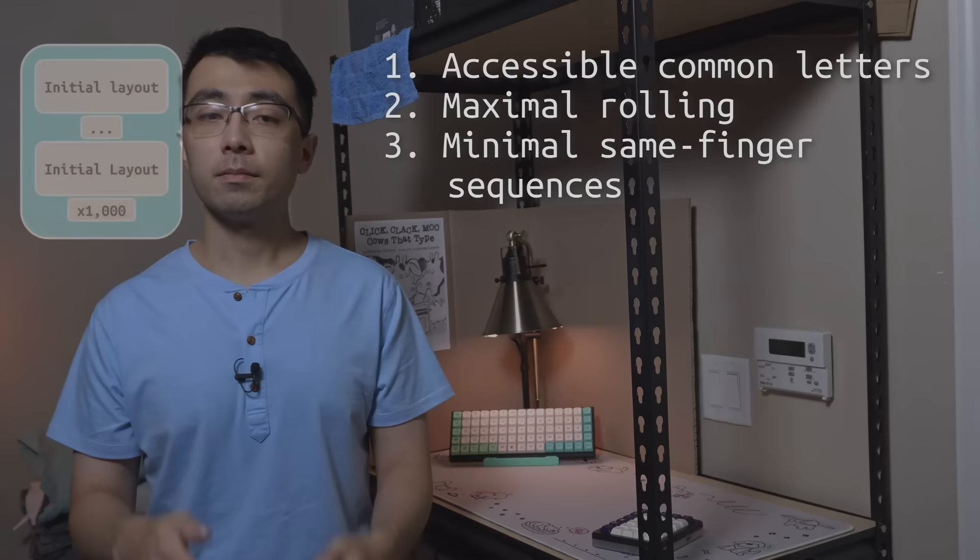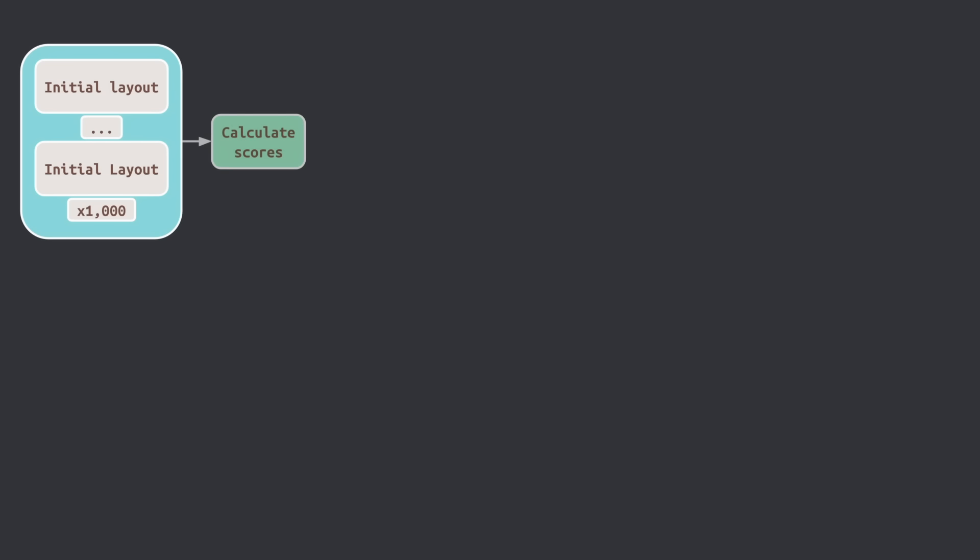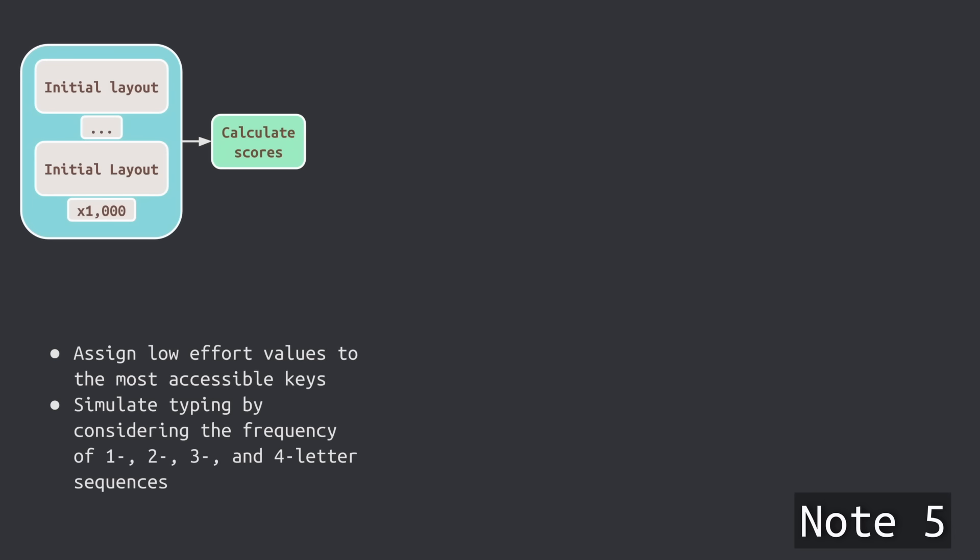Now the question is, how can an algorithm optimize for these criteria? At a high level, the process works as follows. First, the algorithm generates some number of random layouts, say 1000, and scores how good they are. One such approach for scoring is to assign some kind of effort value to each key position in the layout and then sum up the total effort required to type some sequence of text. Lower overall effort is better. For such text, I'm using some novels from Project Gutenberg, maybe not the most representative for modern English, but good enough.